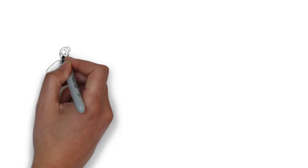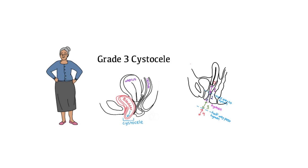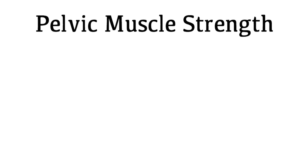On your examination, Mrs. Watson appears to have a Grade 3 Cystocele. This means that her bladder is descended halfway past the hymen. She does not appear to have any uterine prolapse, rectocele, or enterocele.